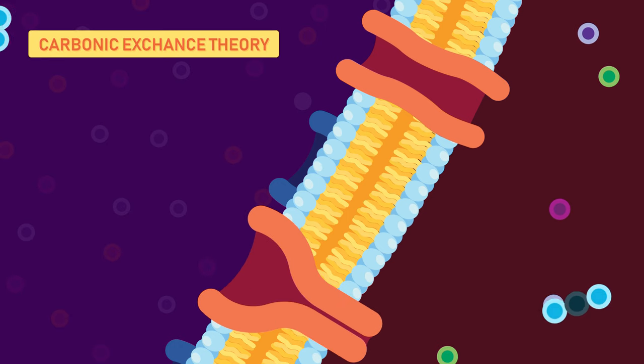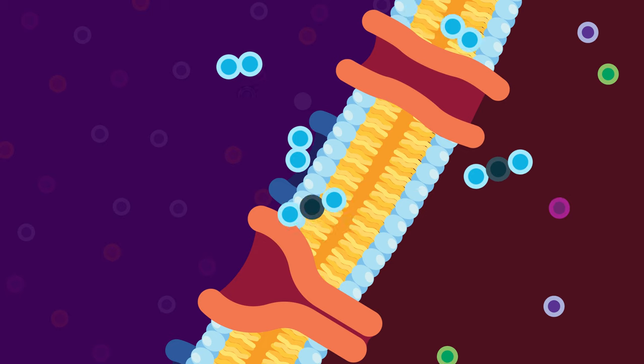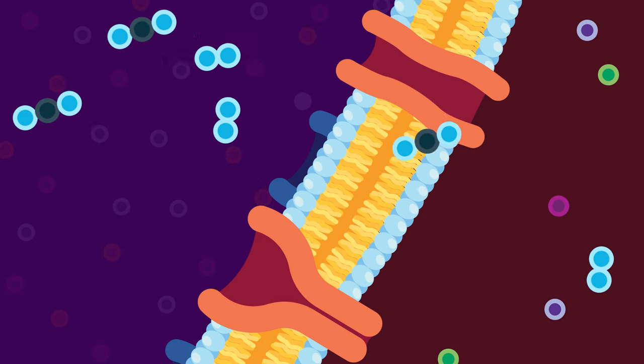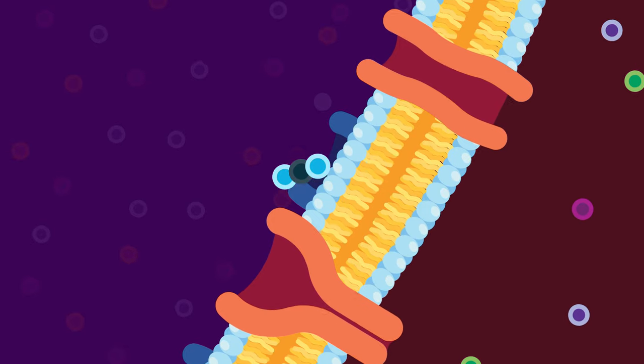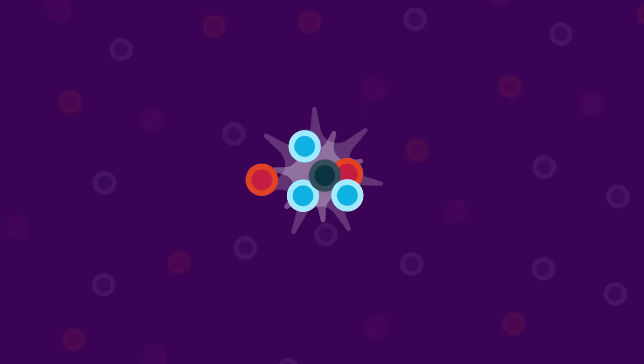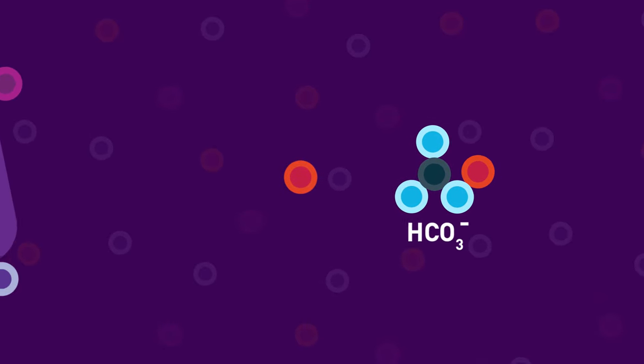Carbonic exchange theory: Roots of the plants continuously respire, which results in production of carbon dioxide. The carbon dioxide produced during respiration in roots combines with water to form carbonic acid, which dissociates into hydrogen and bicarbonate ion. The hydrogen ions produced as a result are exchanged with cations in soil.